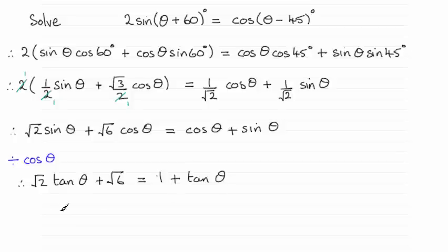If I rearrange this - subtract tan θ from both sides and subtract √6 from both sides - then pulling out tan θ as a common factor, I'm going to have (√2 - 1) tan θ, and that's going to equal 1 - √6.